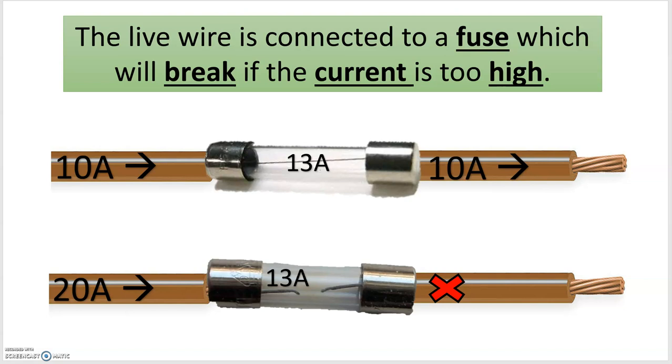The fuse is really important to save the appliance from exploding or catching fire. Once the fuse breaks, you'll have a gap in the circuit. It becomes an incomplete circuit and the current can't flow.